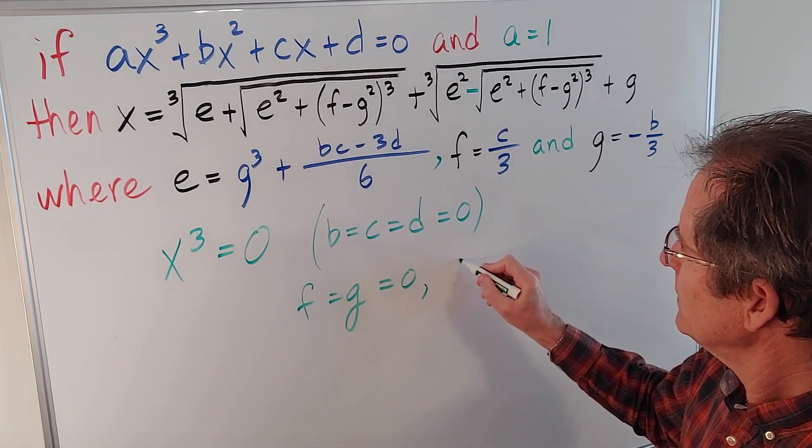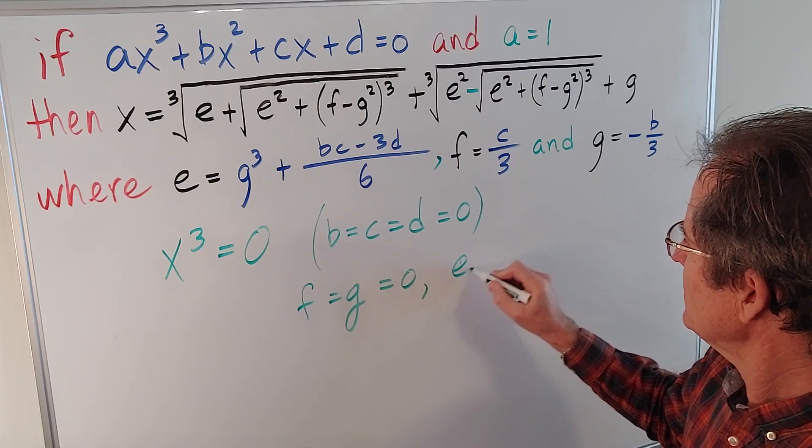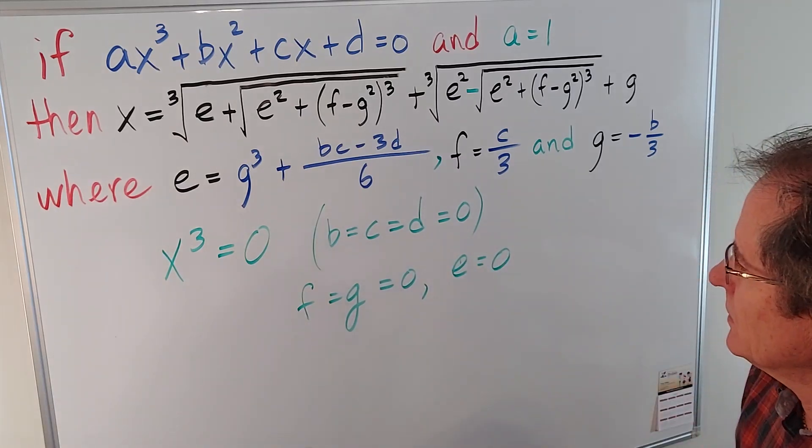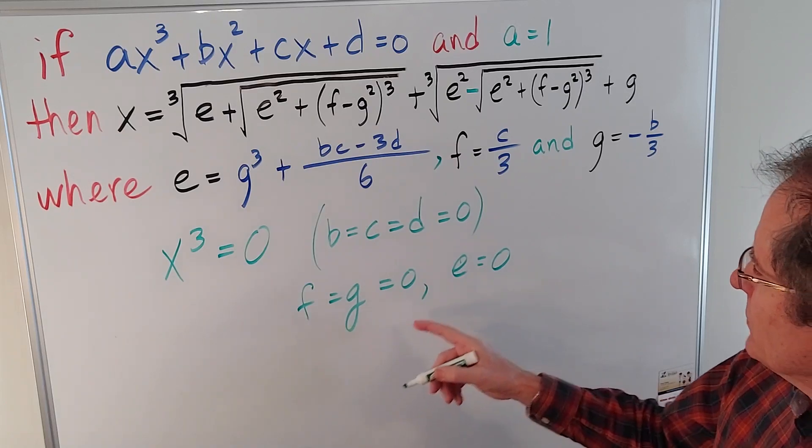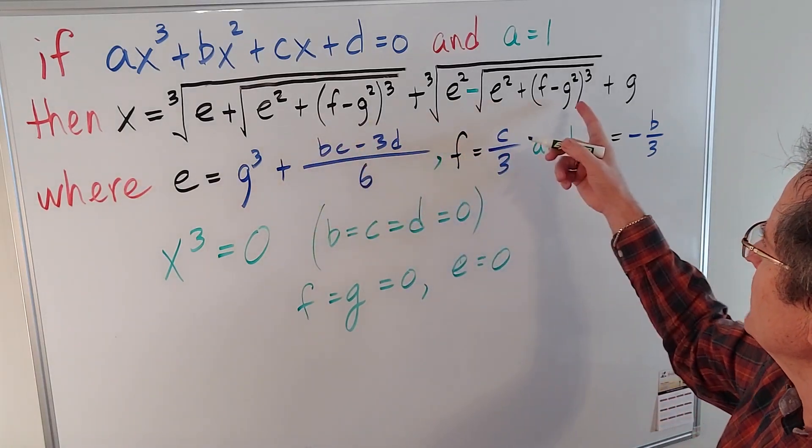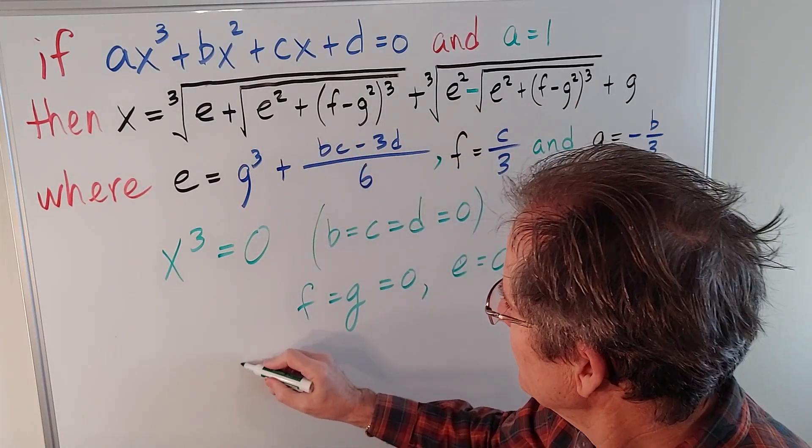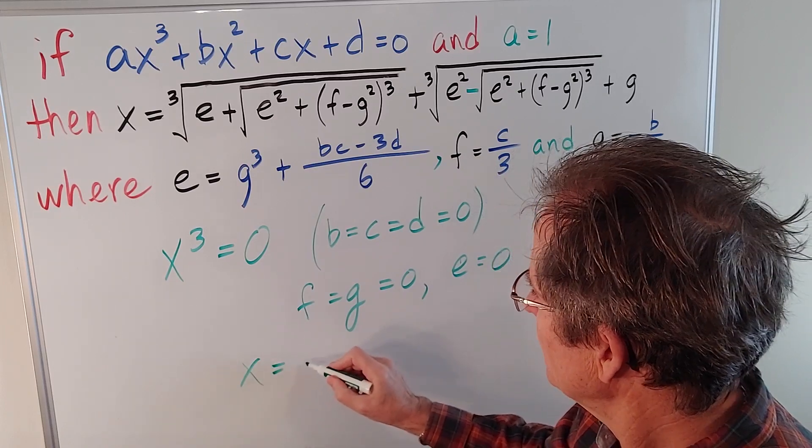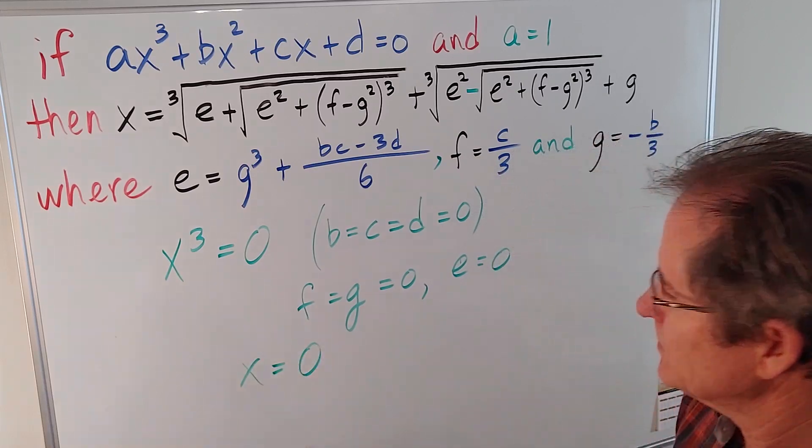So f and g are 0, and if you plug all the values into here, it turns out that e is also equal to 0. You can check that quickly. So if those are all 0, and I put all 0s up in here, I'm going to get x equals 0, as expected.